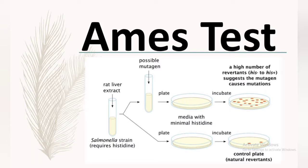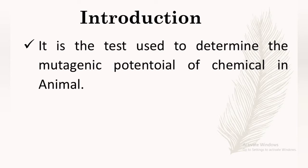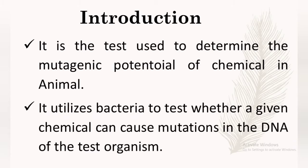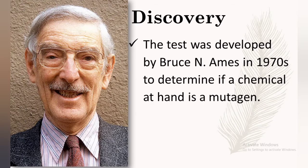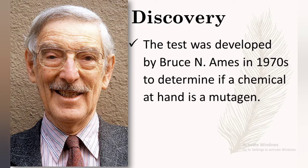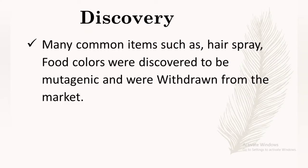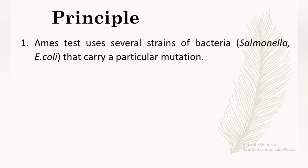I am going to explain about the Ames Test. The Ames Test is used to determine the mutagenic potency of chemicals in animals. It utilizes bacteria to test whether a given chemical can cause mutation in the DNA of a test organism or not. It was discovered by Bruce M. Ames in the 1970s to determine if a chemical is a mutagen or not. He tested many common items such as hair spray and food colors, and found mutagens that were withdrawn from the market during those days.